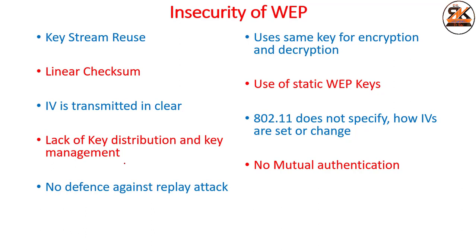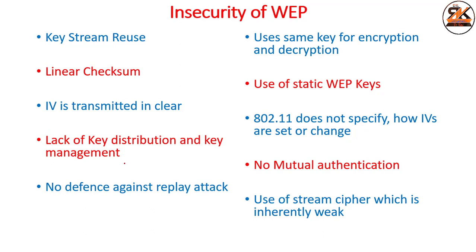There is no mutual authentication — WEP uses unilateral authentication, where only one party authenticates the other, not both. Finally, WEP uses a stream cipher, which is considered inherently weaker than a block cipher. These are the insecurities of WEP: what WEP provides, its encryption and decryption mechanisms, and where it falls short. Thank you for watching.